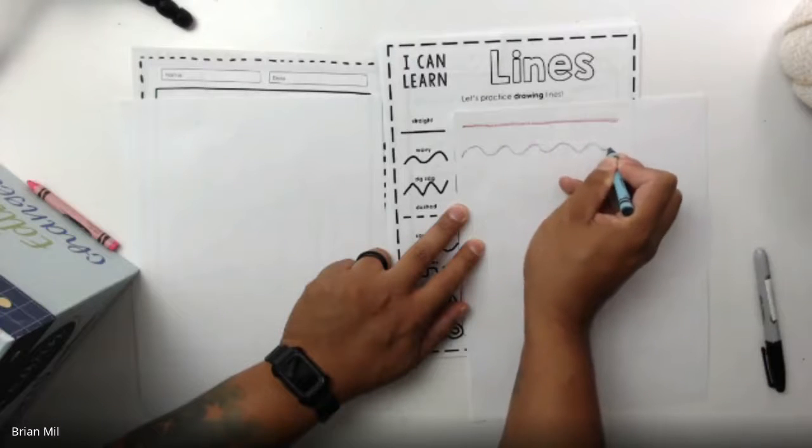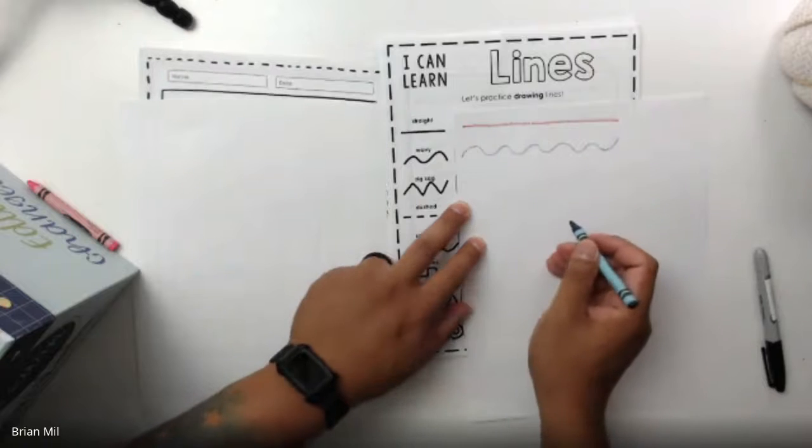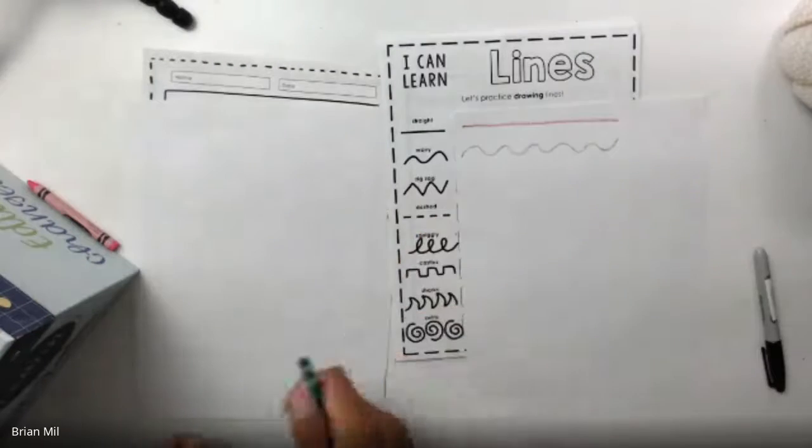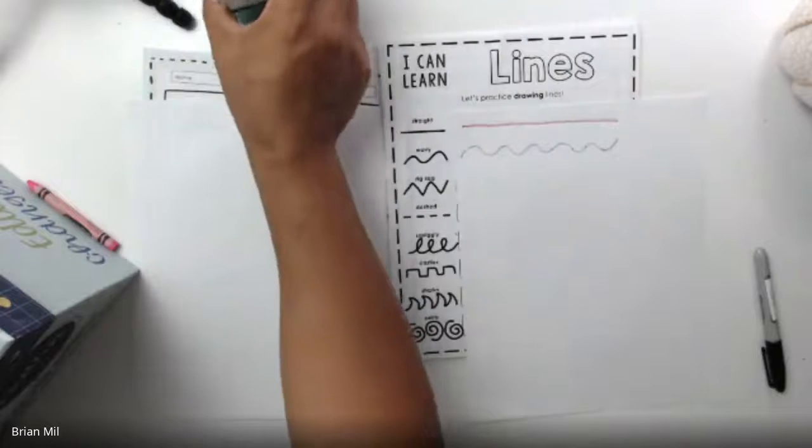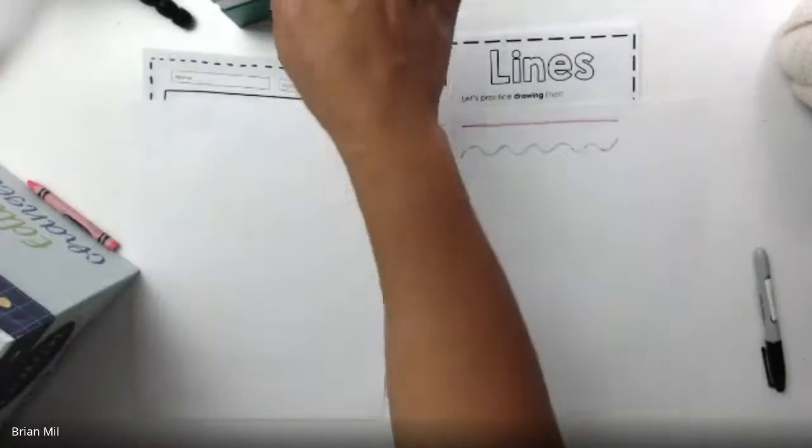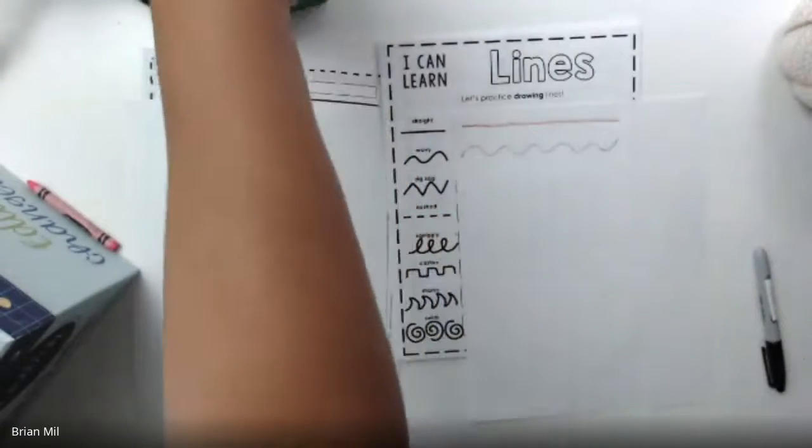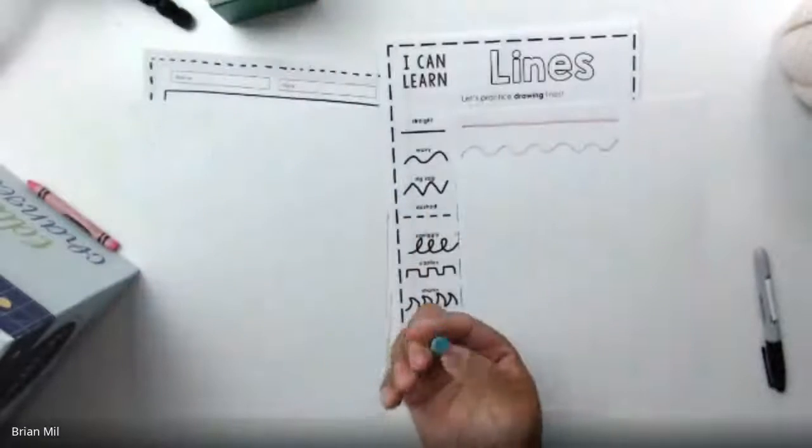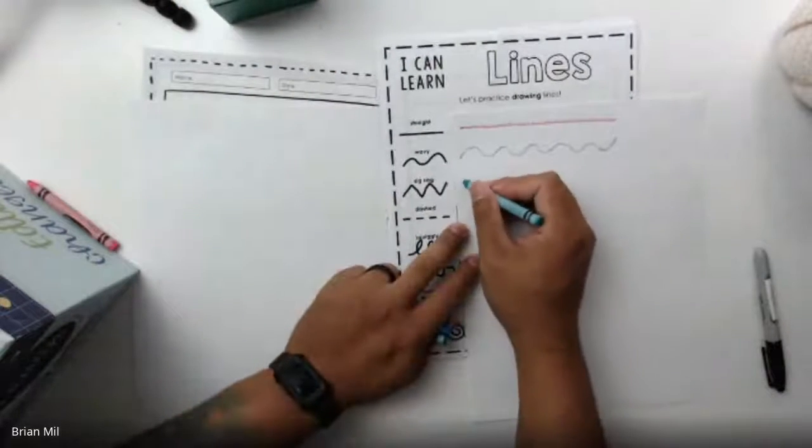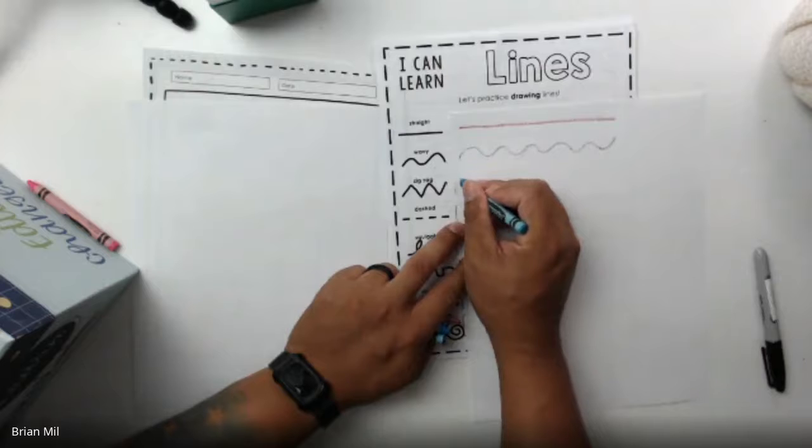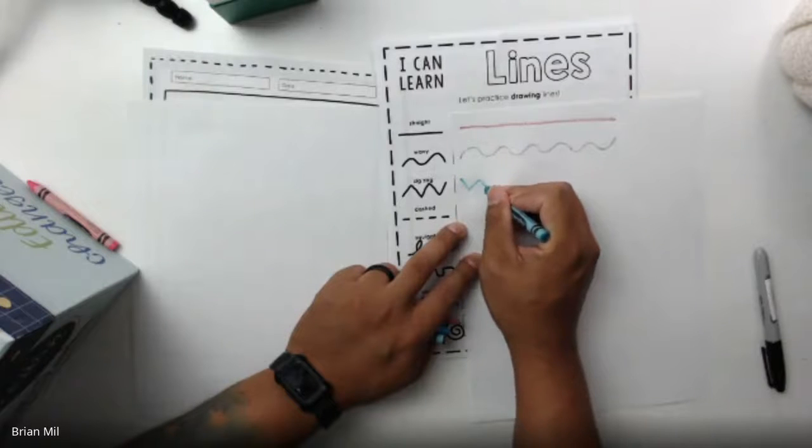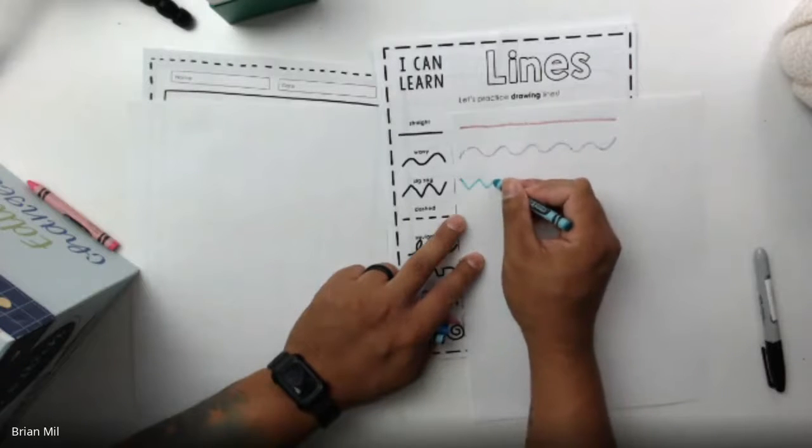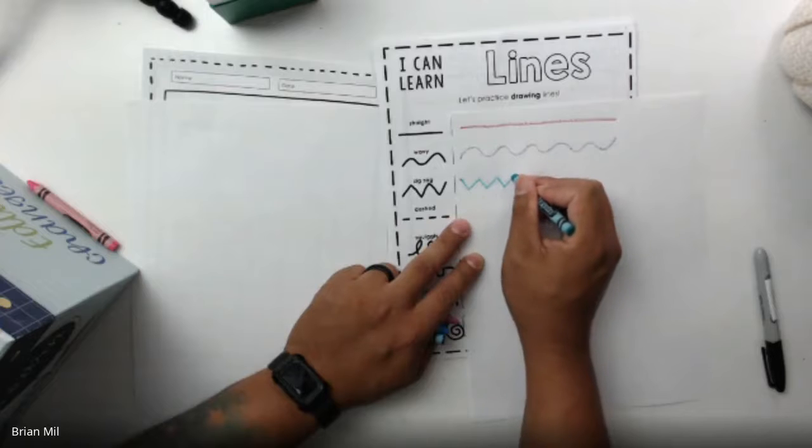So you're copying the lines. There we go, wavy line. Pretty cool, huh? All right, my next one, the next one is called zigzag. So we've done this before, so it shouldn't be too hard. Let's try it out, zigzag. Just like this.